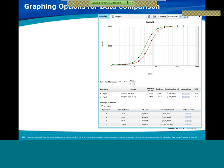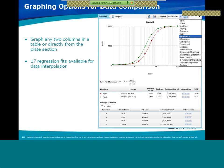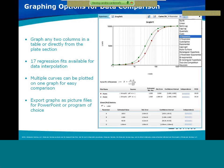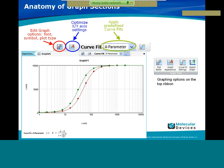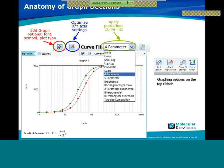The graphing options are very useful for comparing data — they allow you to graph any two columns from the table or directly from the plate section. There are 17 regression fits available for data interpolation, and you can plot multiple curves on the graph for comparison. You can export the graph as a picture file for PowerPoint. The toolbar allows you to edit graph options, font, symbol, plot sign, optimize X and Y axis settings, and apply a predefined curve fit from the 17 available.